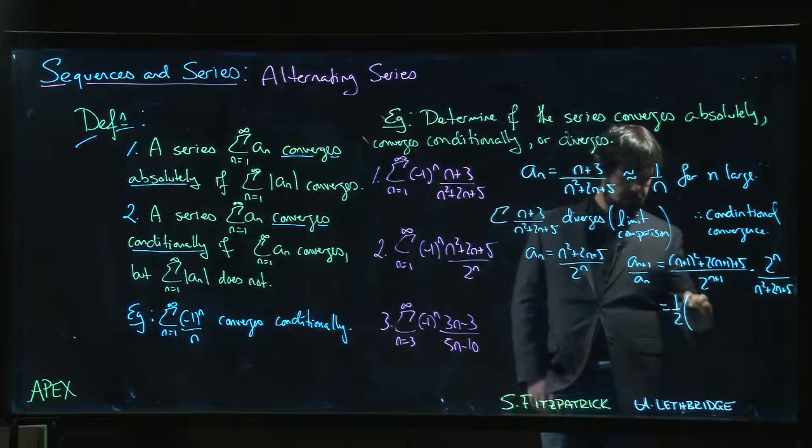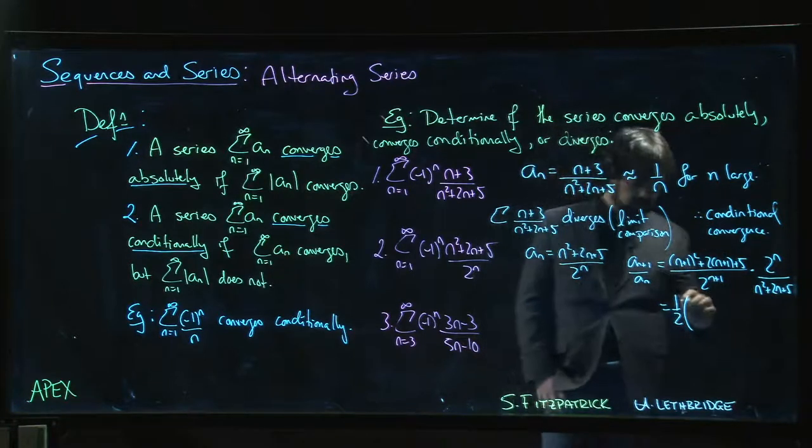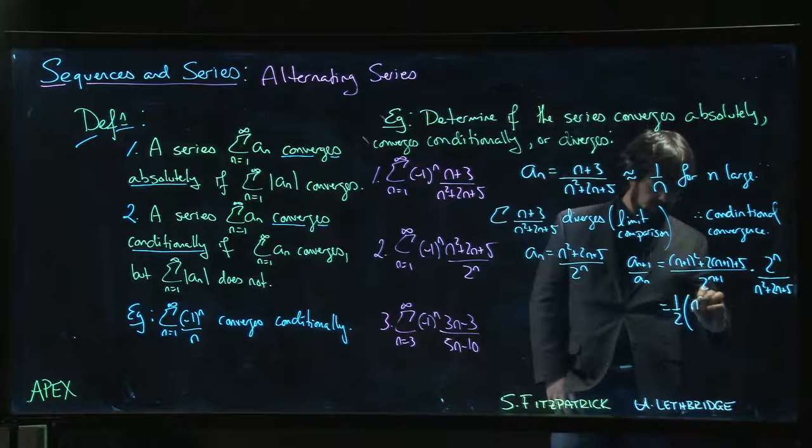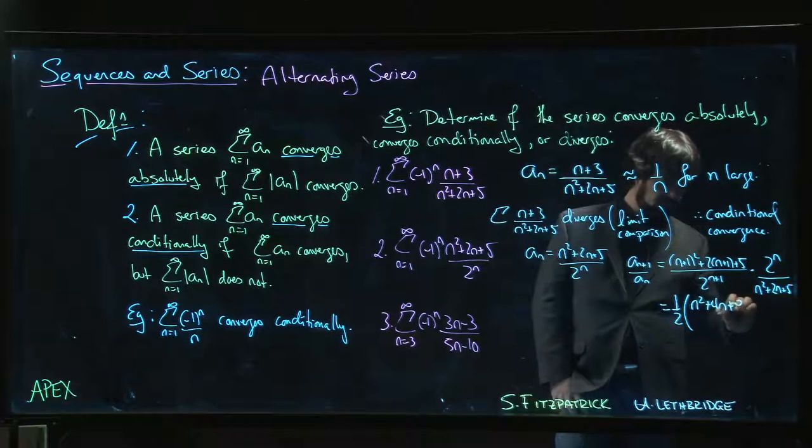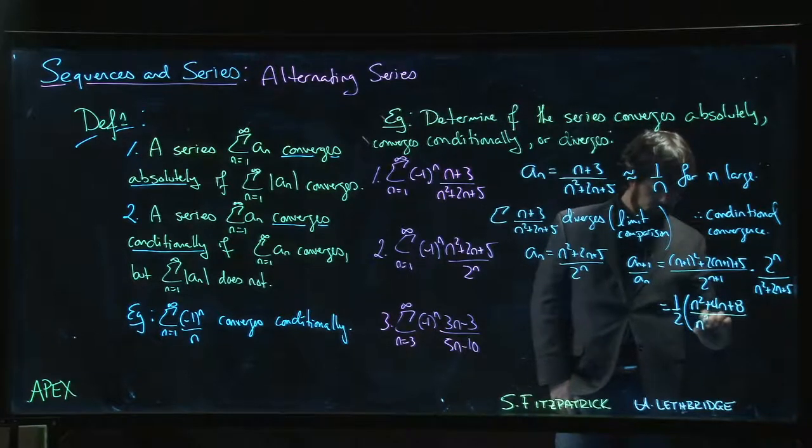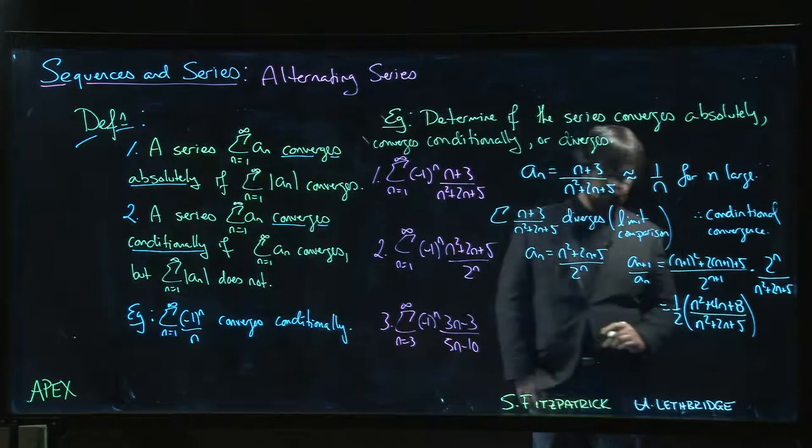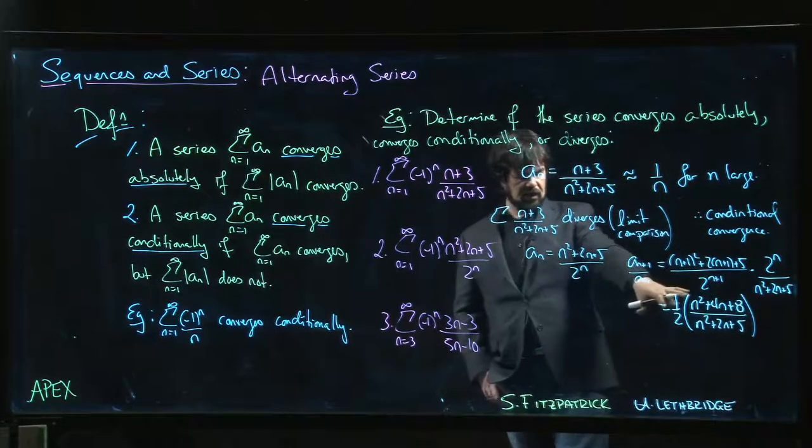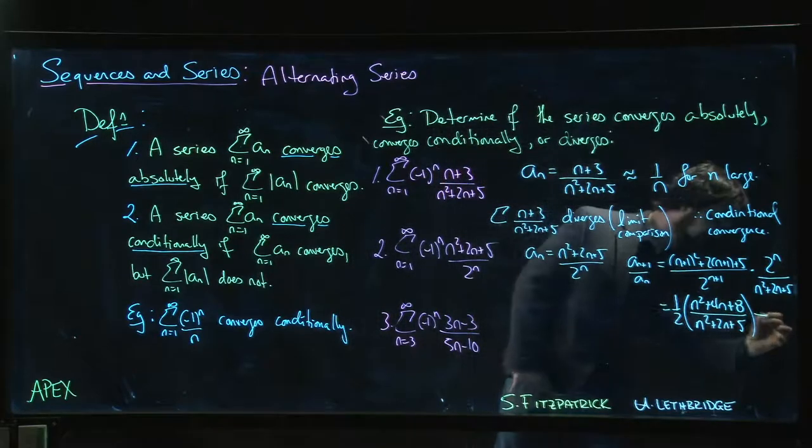Okay, so that's going to be one half times this polynomial, which we can multiply out if we care to - n², 2n, 4n plus 1 plus 2 plus 5, something like that. Details don't really matter here. If we apply the ratio test, we take the limit as n goes to infinity, and it's going to go to one half.